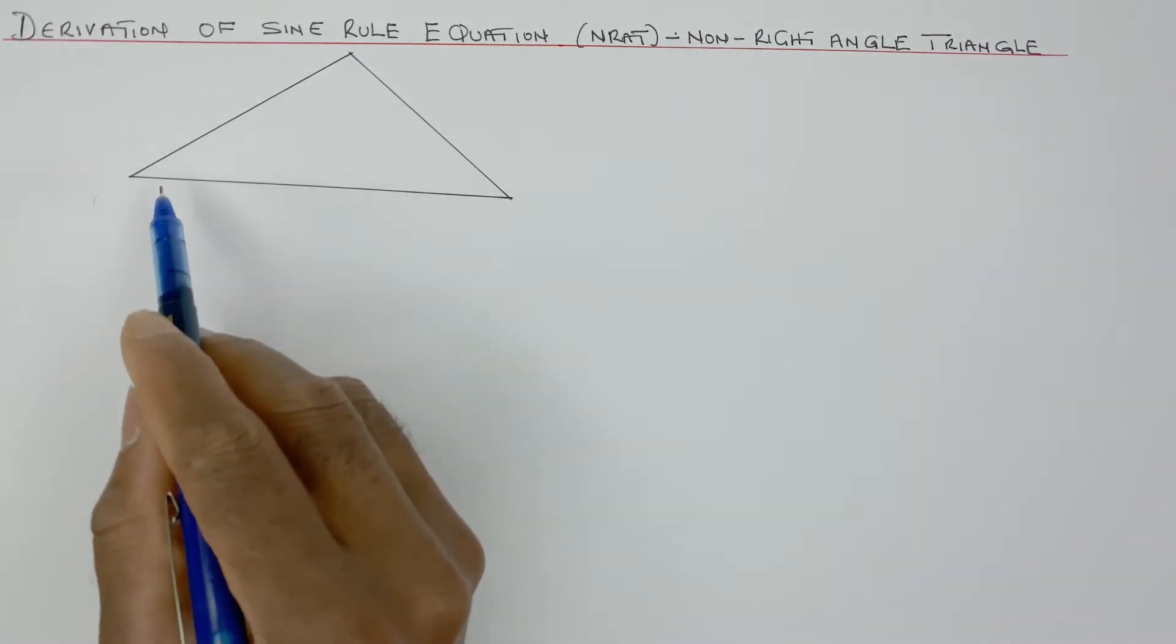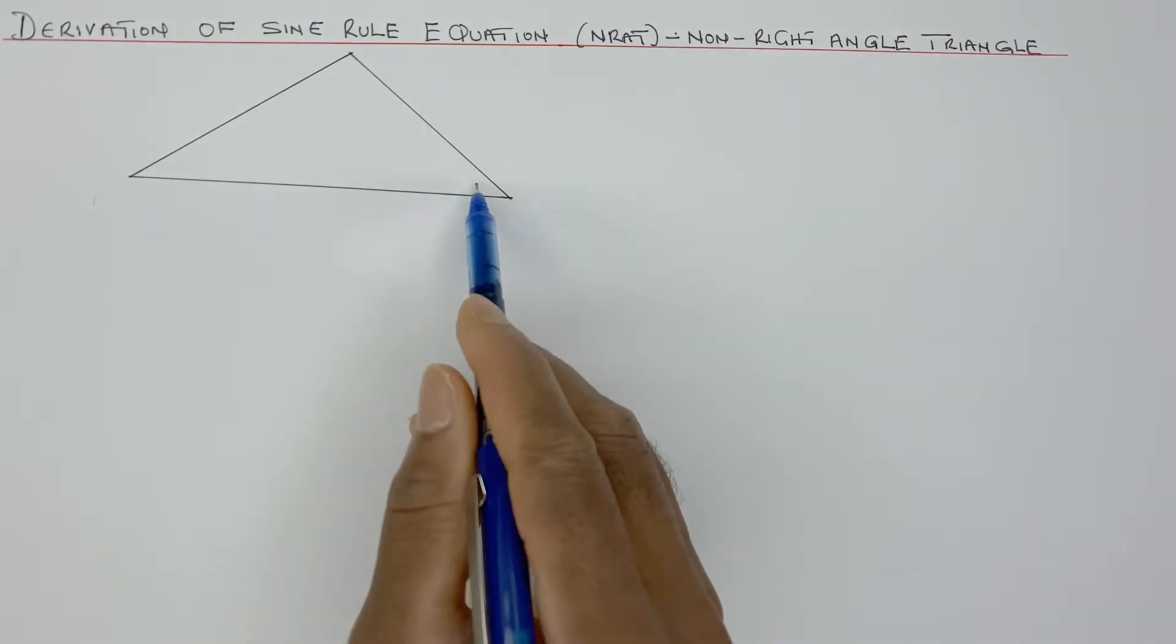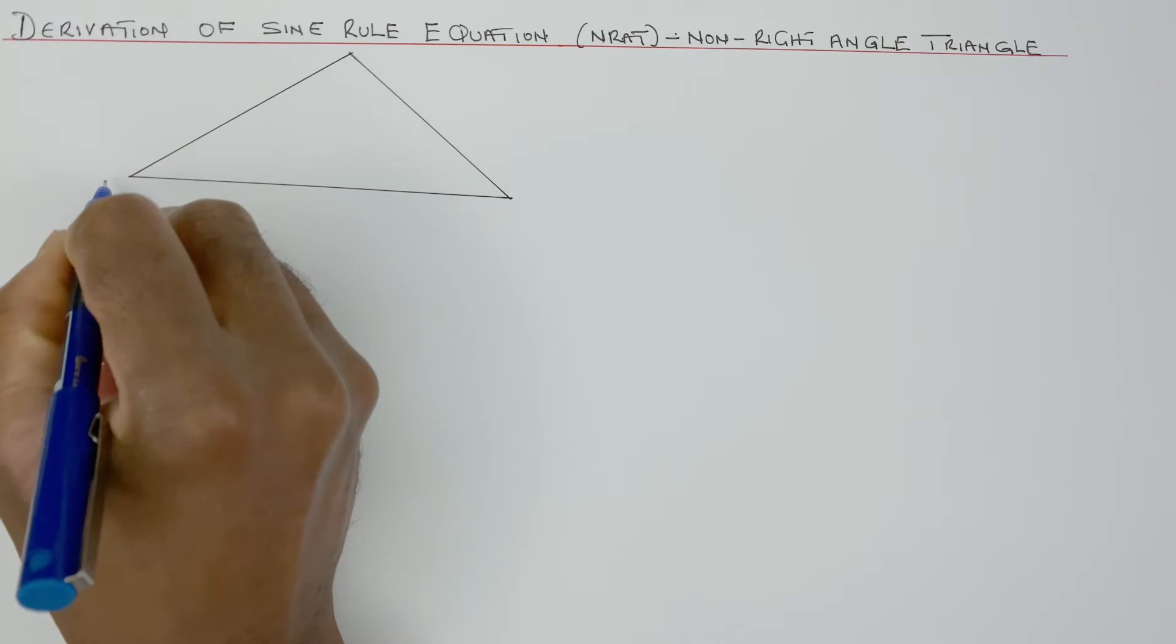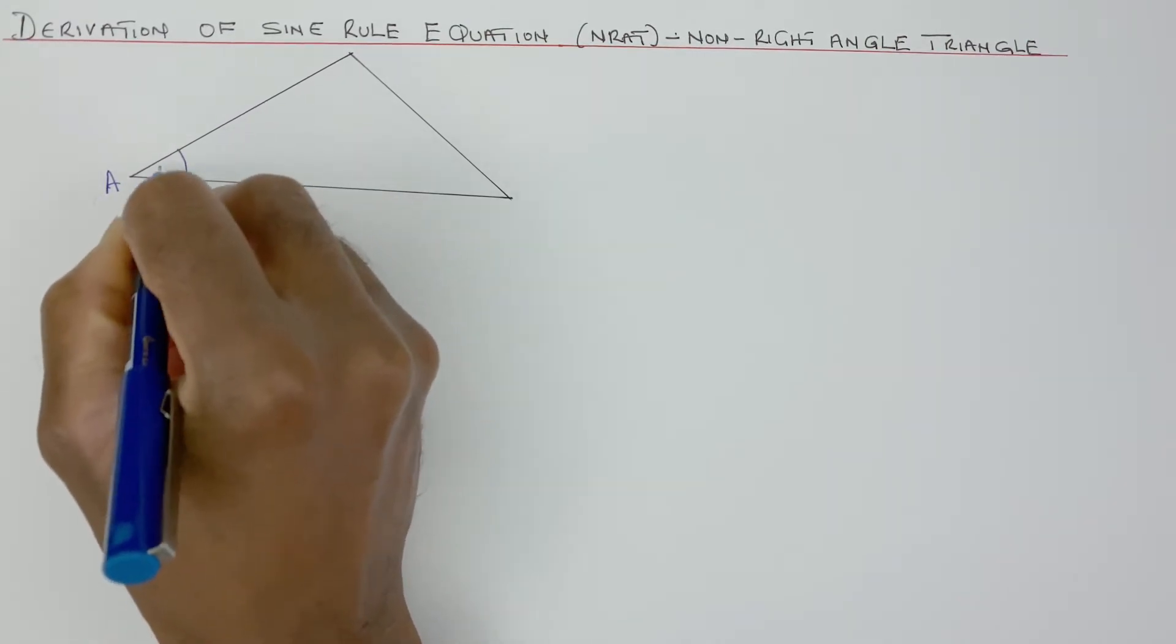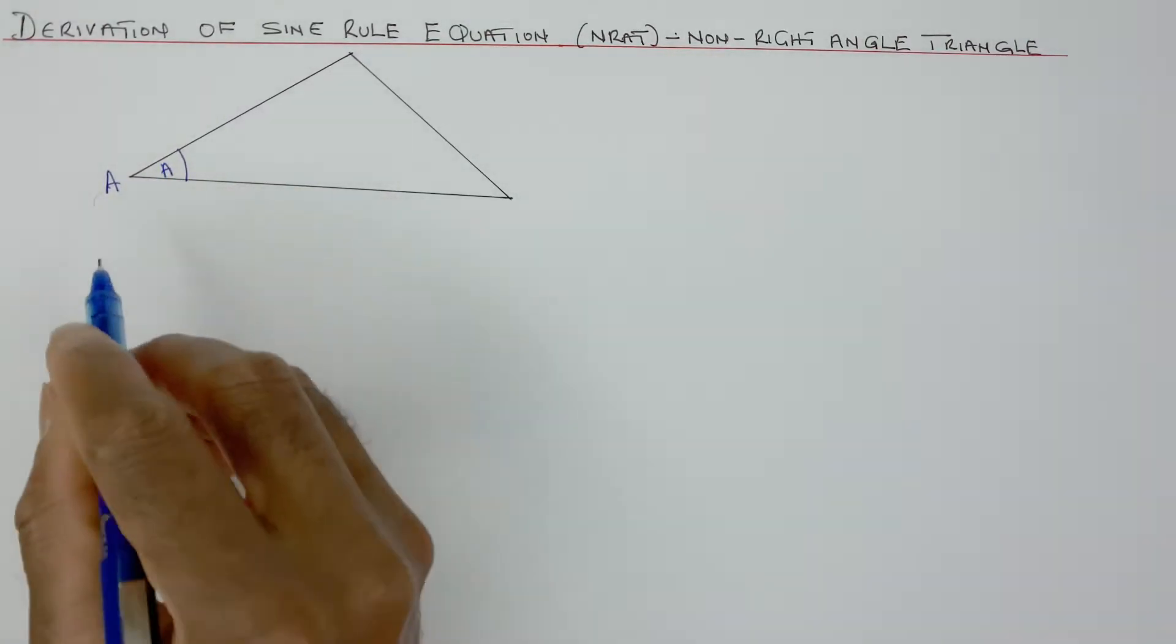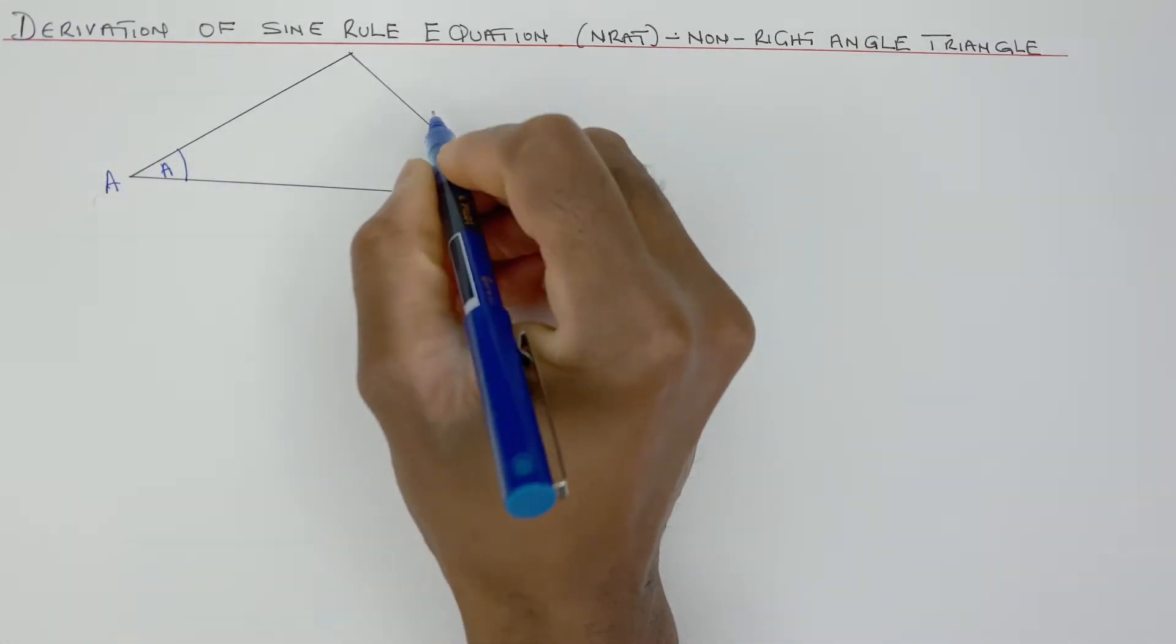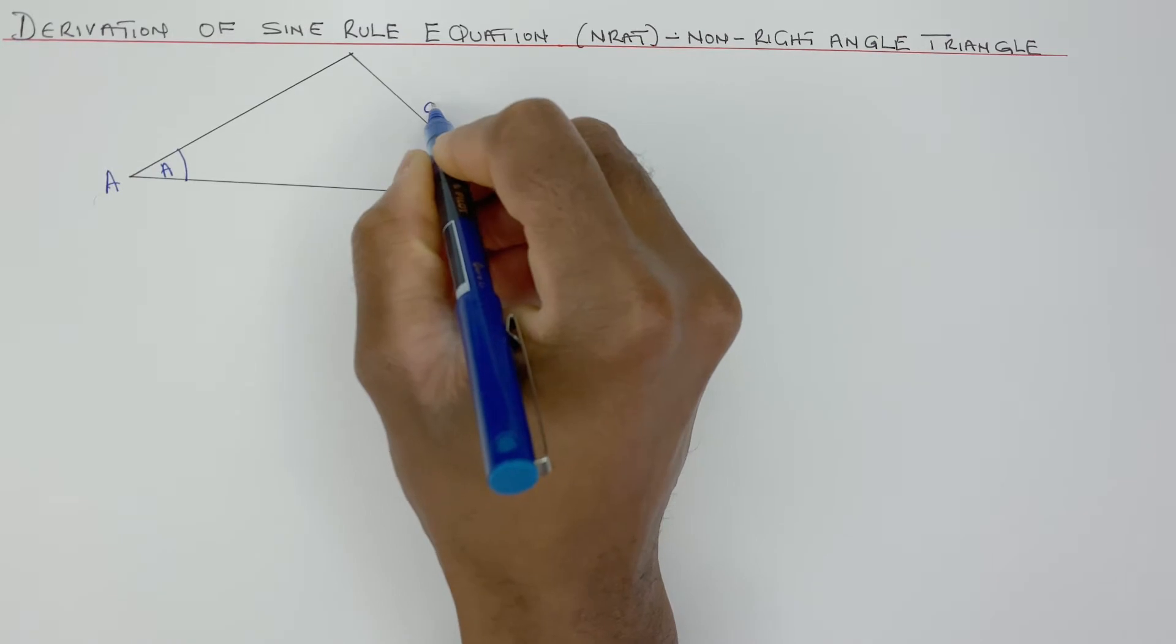That meant that none of these angles here have 90 degrees. If I label that as A, and that meant this is angle capital A. And the opposite to angle capital A is the side here called little a.